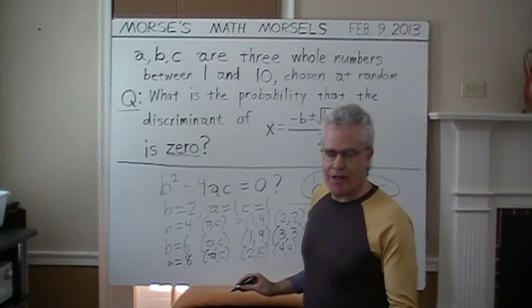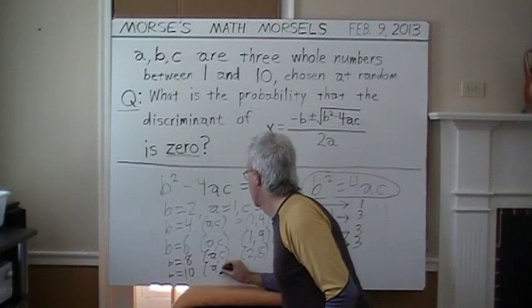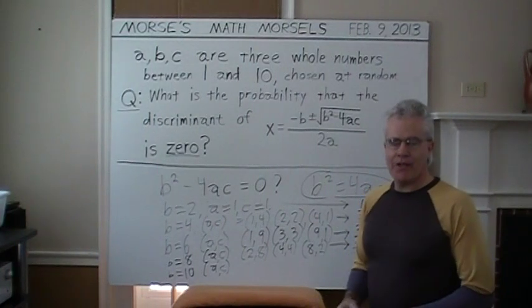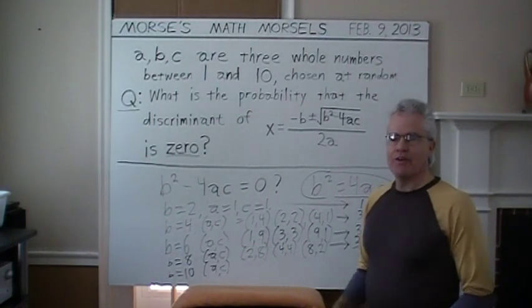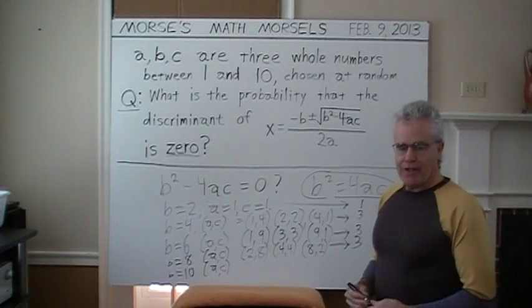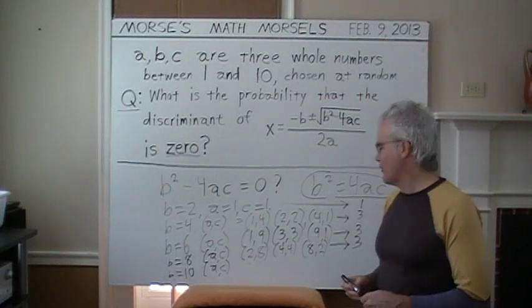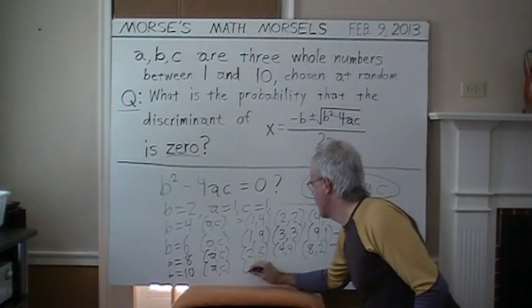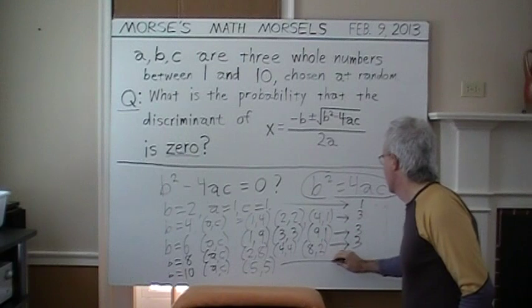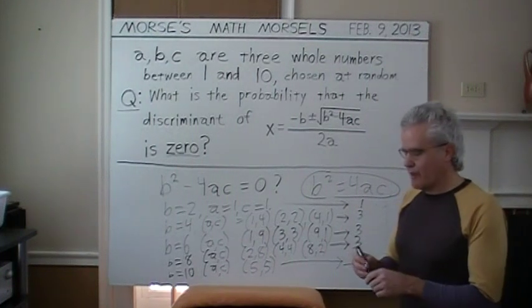B cannot be 9. 9 is odd. Last one. B equals 10. If B equals 10, B squared is 100. So, we need 4 times A times C, which is also 100. Divide each of those by 4. And, we have to have A times C is 25. There is only one pair of those whole numbers, 1 through 10, whose product is 25. Since it ends in 5 and is odd, that can only be 5 and 5 for A and C. Well, that is one outcome. There are no more. We are out of whole numbers that we can use for B.